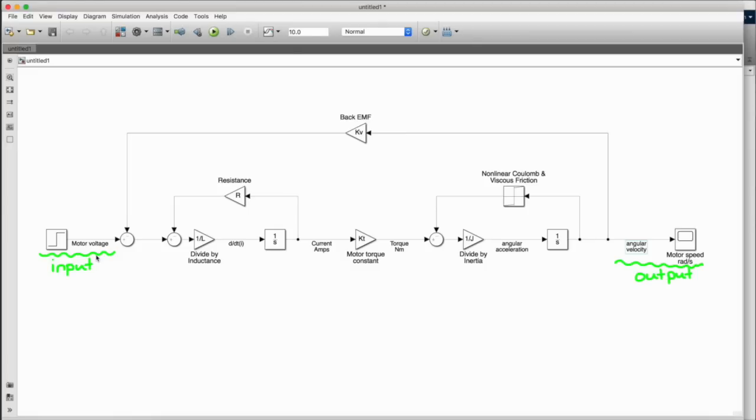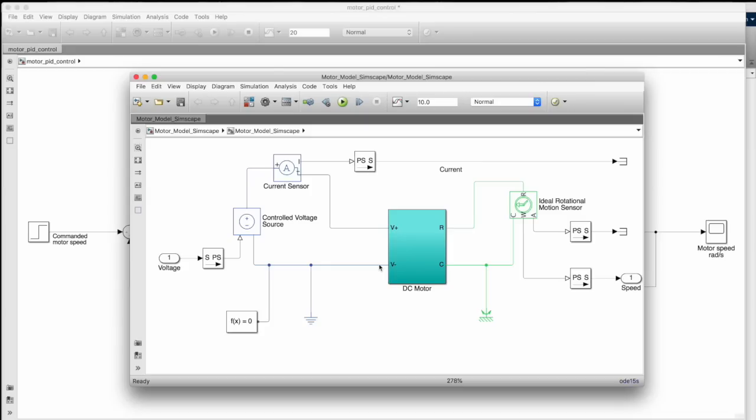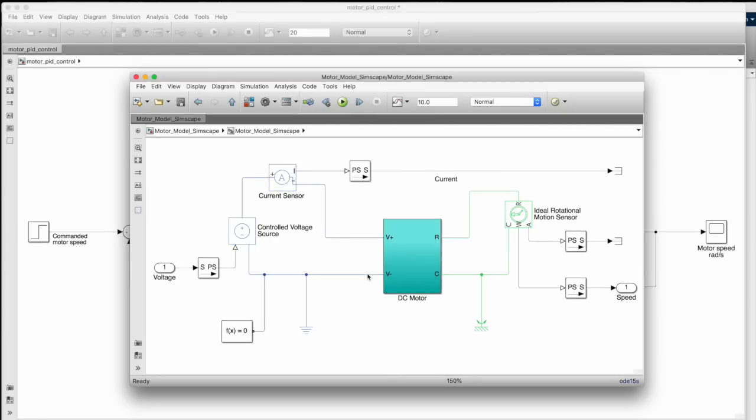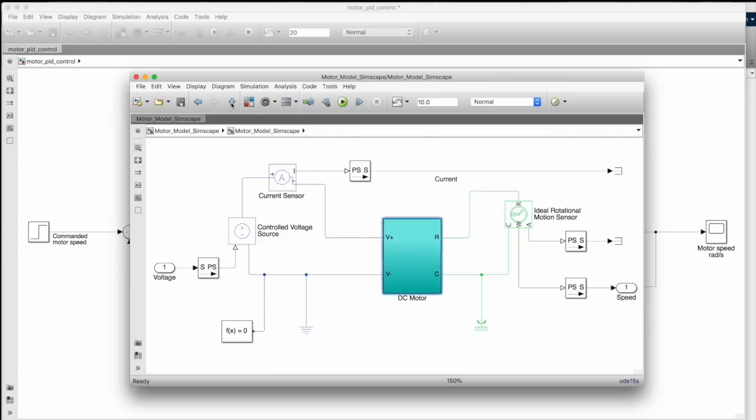I want to quickly show you another way to develop a model from first principles using Simscape within Simulink. Simscape essentially lets you avoid writing out the ordinary differential equations like we just did, and instead lets you draw the mechanical and electrical circuits of the system directly. This is a Simscape model of a DC motor, just to briefly show you what it looks like. Instead of integrators and gain blocks, this model is built with voltage sources and current sensors. Even the DC motor itself is modeled with resistors, inductors, and mechanical components. So, two different ways to create a motor model from first principles.